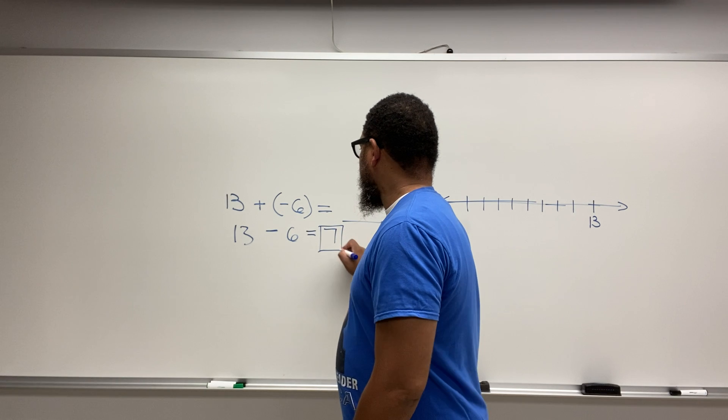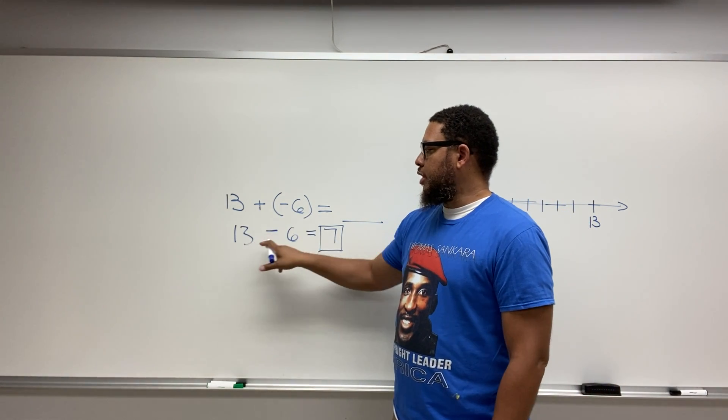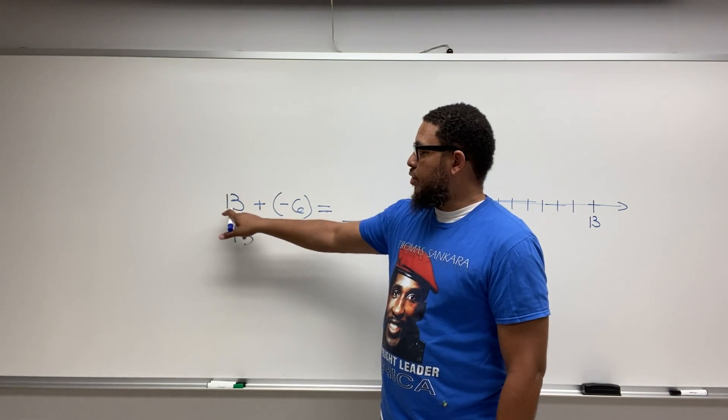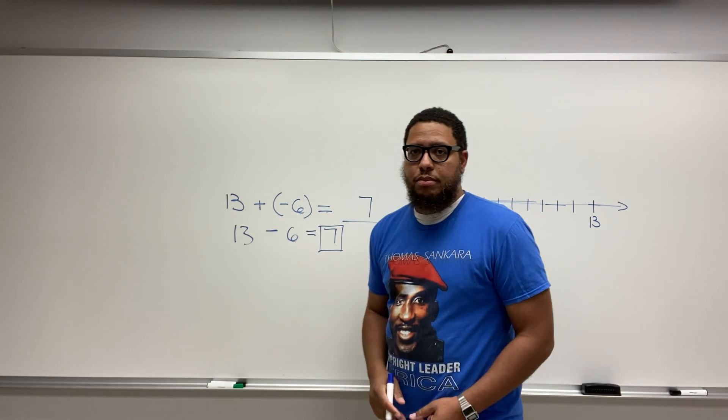So this is our final answer. So 13 plus negative 6 is the same thing as 13 minus 6, which is 7. So that means that 13 plus negative 6 is also 7.